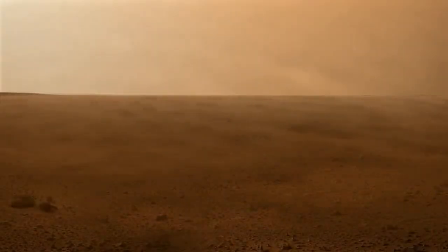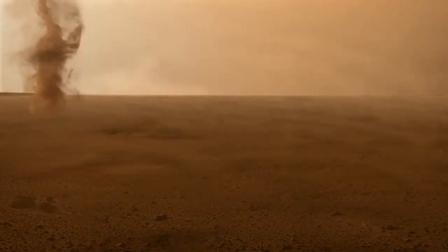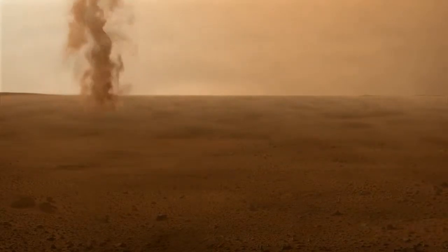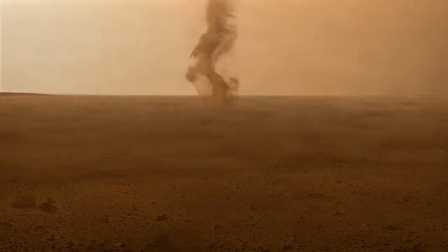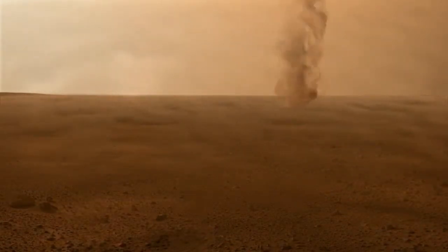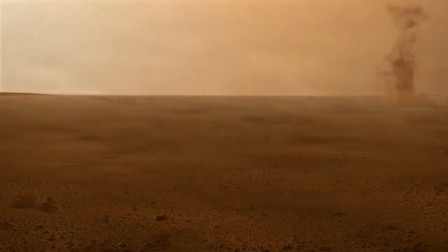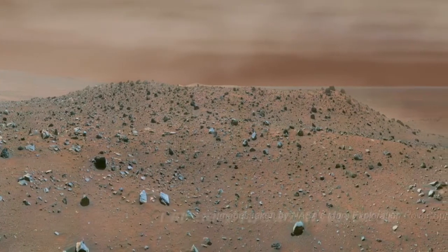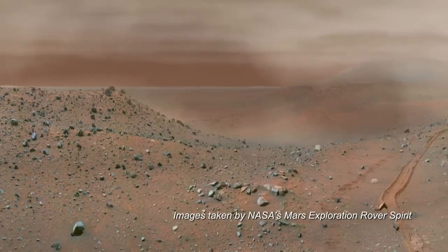Mars has a thin atmosphere that rotates with the planet. Despite being about 100 times less dense than Earth's, the atmosphere is dense enough to support a weather system. The Martian wind causes some of the most spectacular weather on Mars, from tornado-like dust devils to huge dust storms that can last for months and engulf the entire planet. Carbon dioxide dominates the Martian atmosphere, which contains small amounts of other gases, including water vapor.